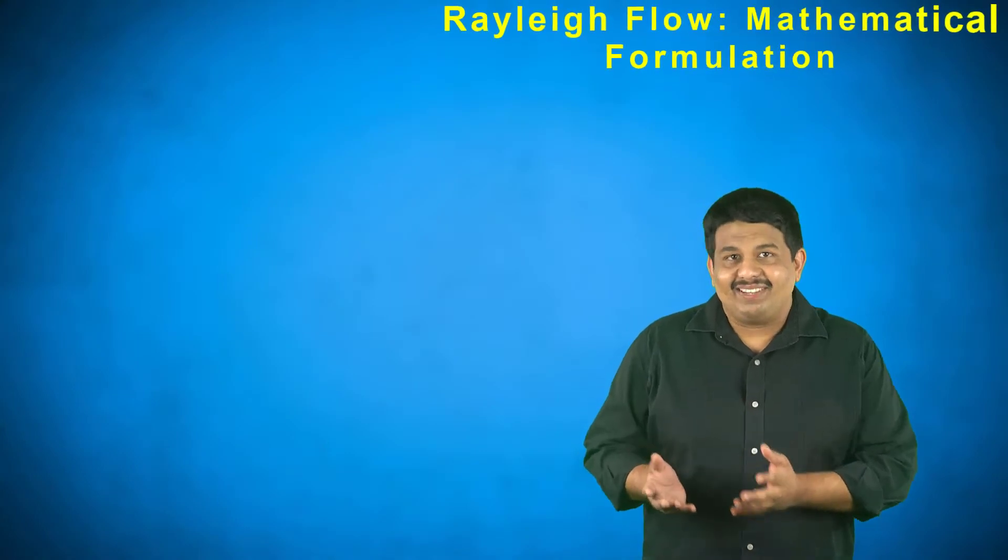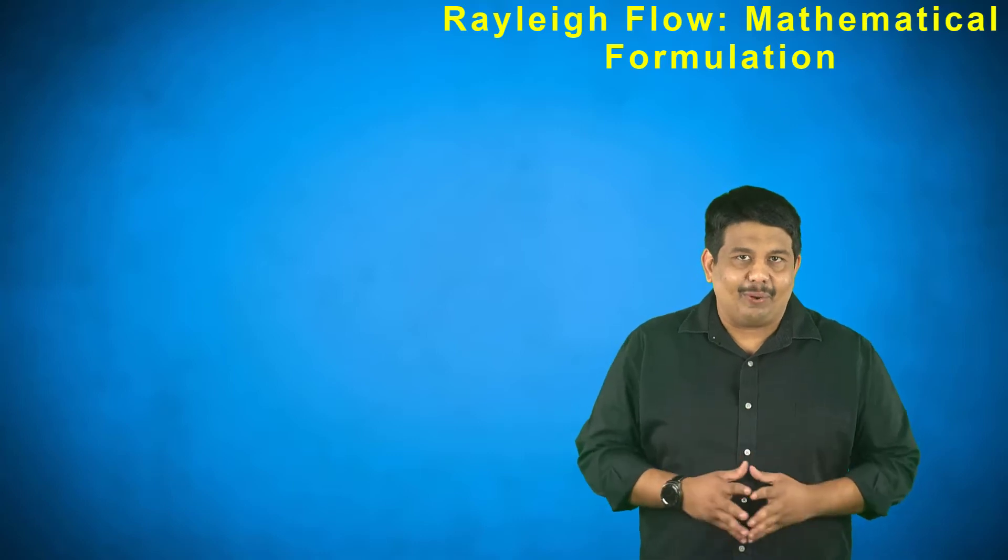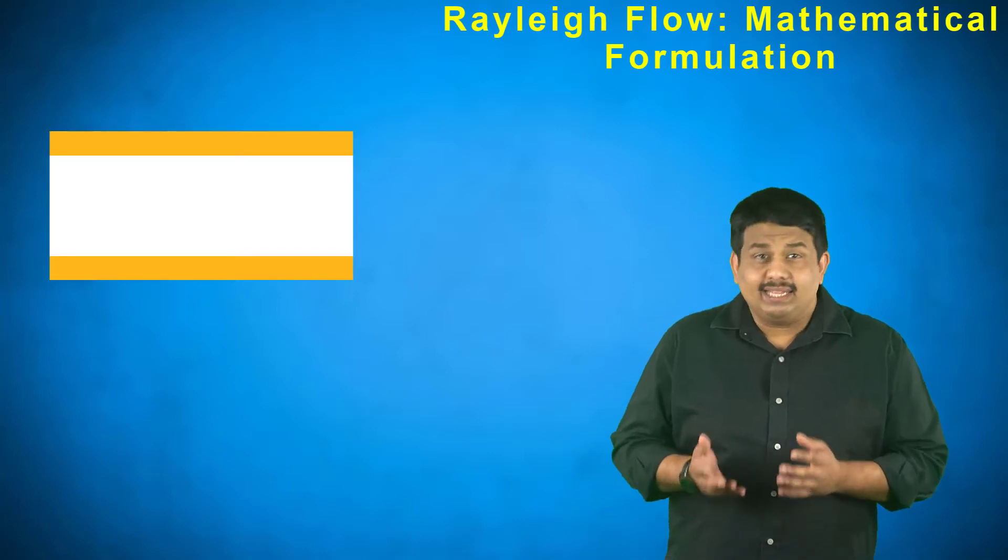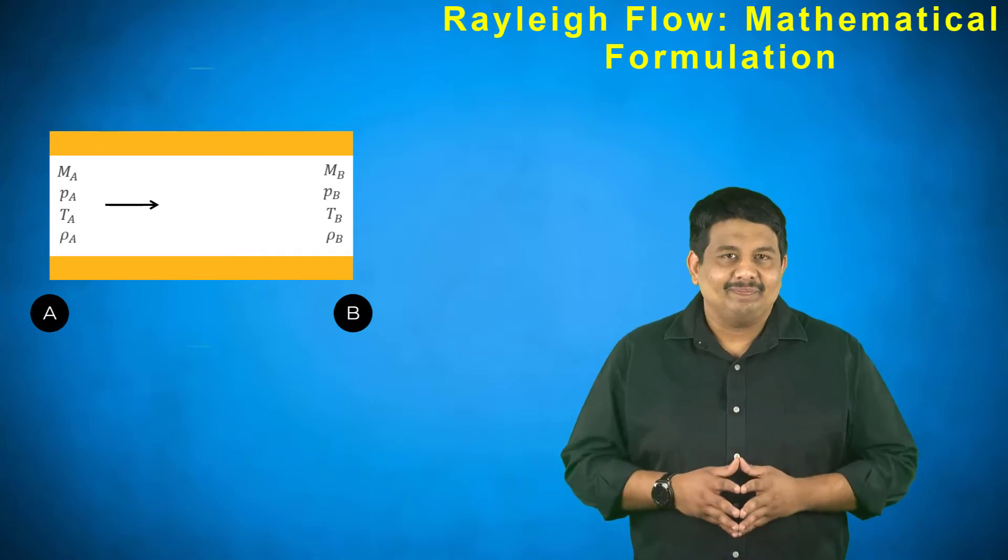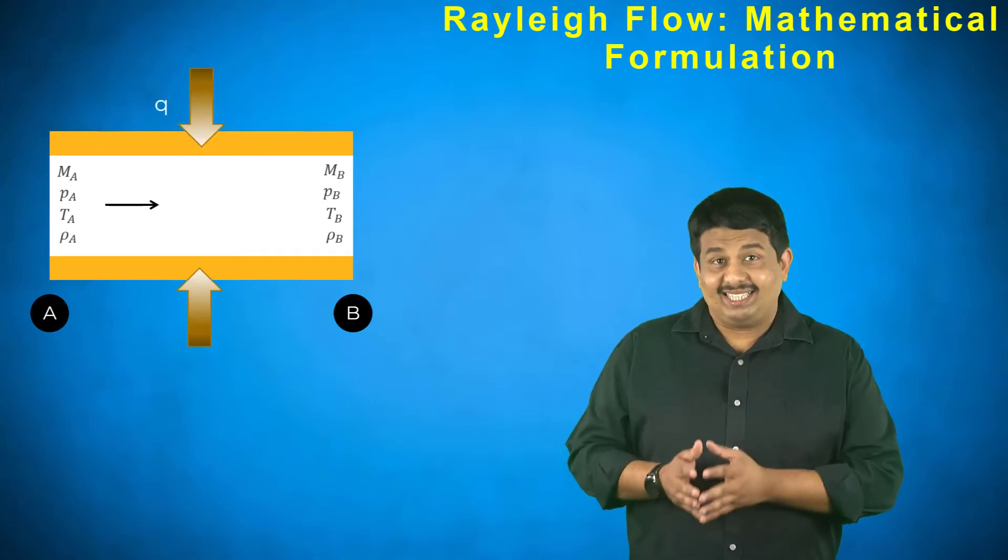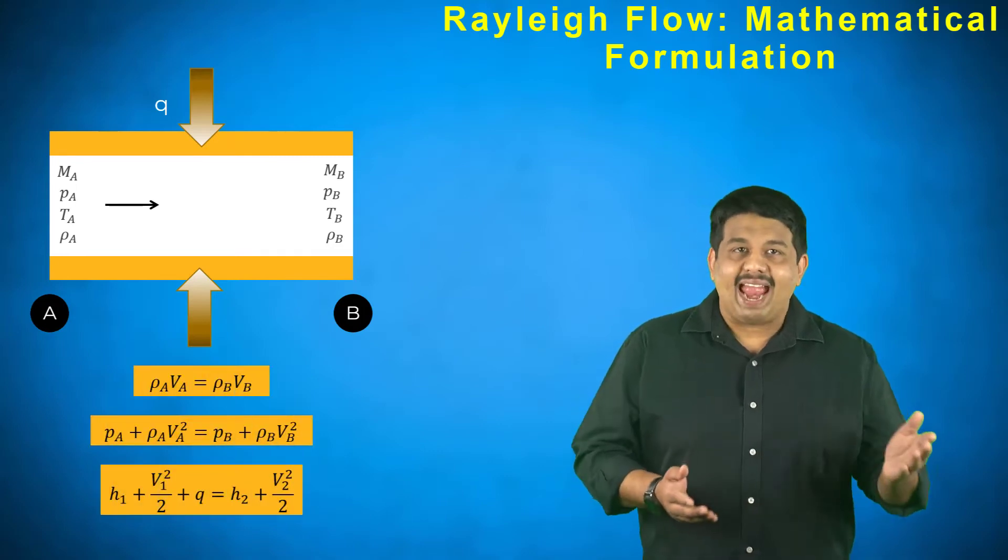Let us investigate the Rayleigh flows first by looking at one-dimensional gas flow. Let us say that the heat is added between regions A and B. Here are the 1D steady state governing equations: the continuity, momentum, and energy.